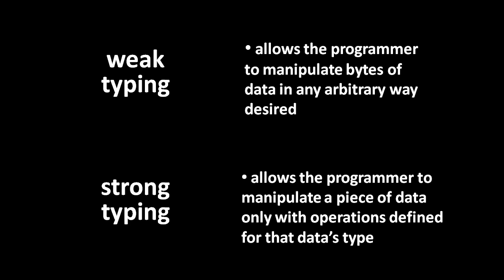In contrast, weak typing allows the arbitrary manipulation of the bits of any piece of data, while strong typing does not. In principle, a language can have any combination of the two. Python, for example, combines strong typing and dynamic typing, while Java combines strong typing and static typing, and C combines weak typing and static typing. However, there's no language I know of which combines weak typing and dynamic typing.